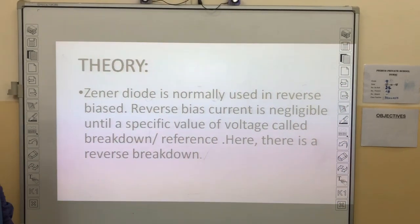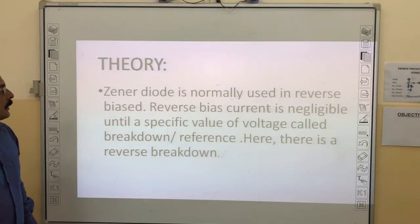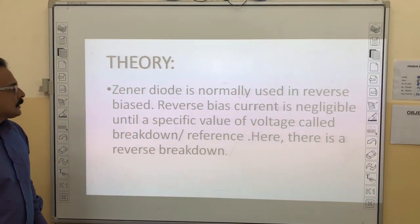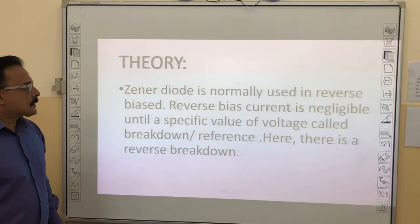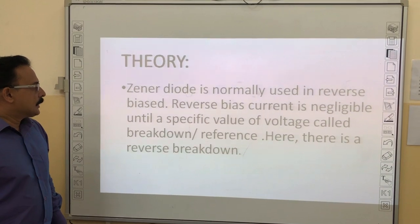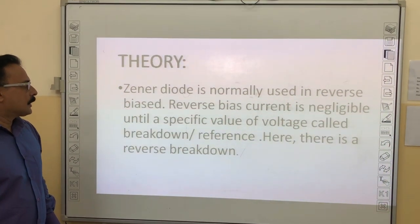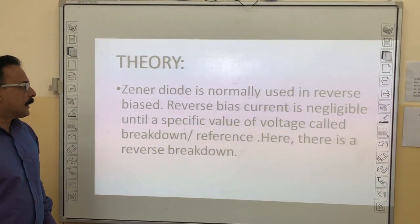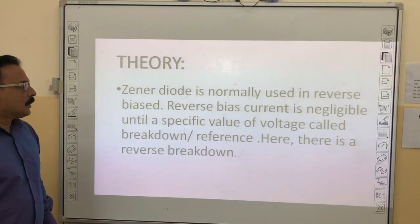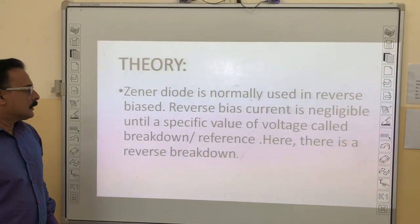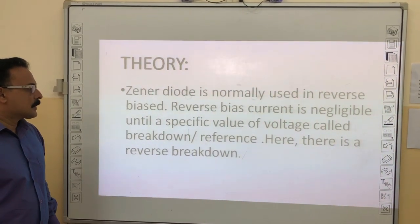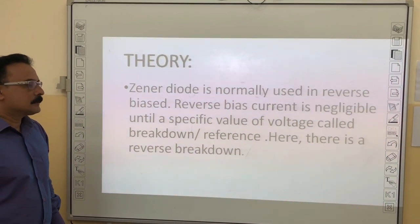The zener diode is normally used in reverse bias. The reverse bias current is negligible until a specific value of voltage called the breakdown voltage, after which there is a reverse breakdown.